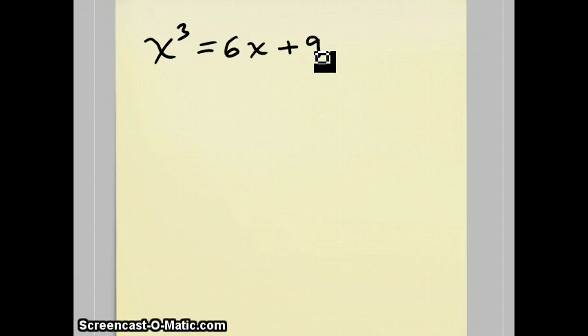This particular example you could solve by trial and error and see that the answer is actually 3, or at least one of the answers is 3. 3 cubed is 27. 6 times 3 is 18 plus 9 is also 27.